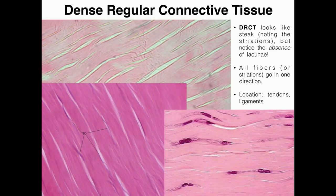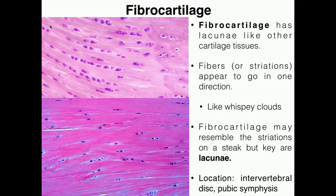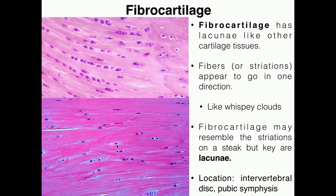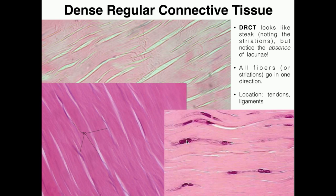Let's look at the last one: dense regular connective tissue. This looks very similar to fibrocartilage. In fibrocartilage we have striations, and we also have them in dense regular connective tissue. All of these striations go in the same general direction — in the bottom left they're going diagonally, in the right one they're going horizontally, in the top picture they go at an angle. You may see some cells here, but these are not chondrocytes in lacunae. These are just simple fibroblasts — they don't have the white surrounding that lacunae have. You'll typically just see them as purple blobs without a light region around them. So these are not lacunae; these are just fibroblasts.